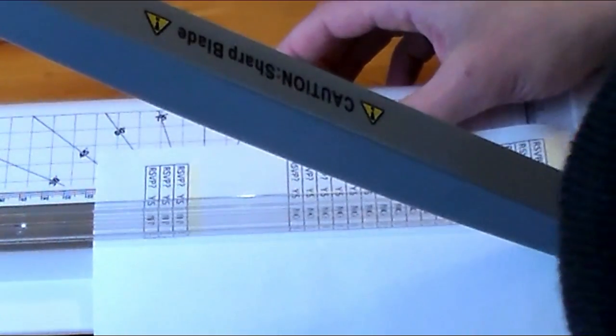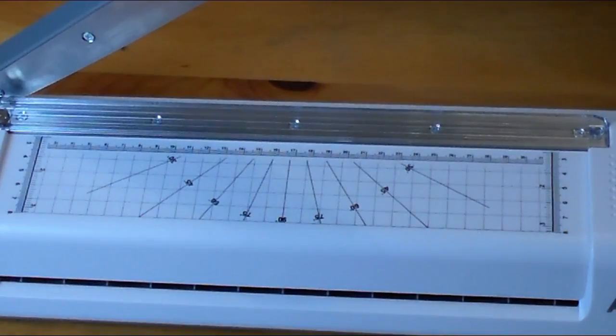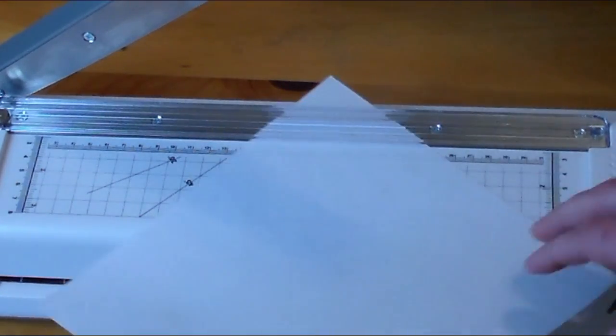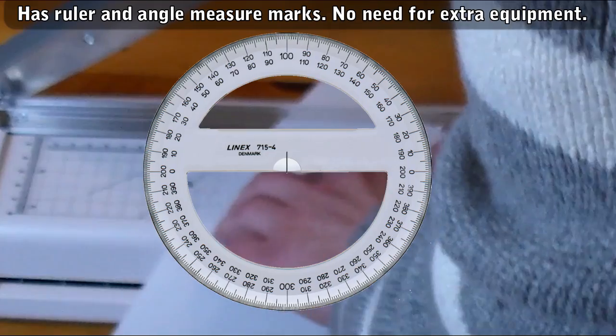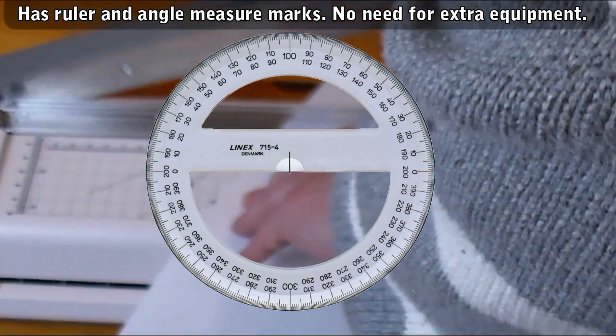Also, see those lines radiating outward on the ruler area? Those are for making precise angle cuts. No need to dig out that protractor from some dark corner of your office supply storage.